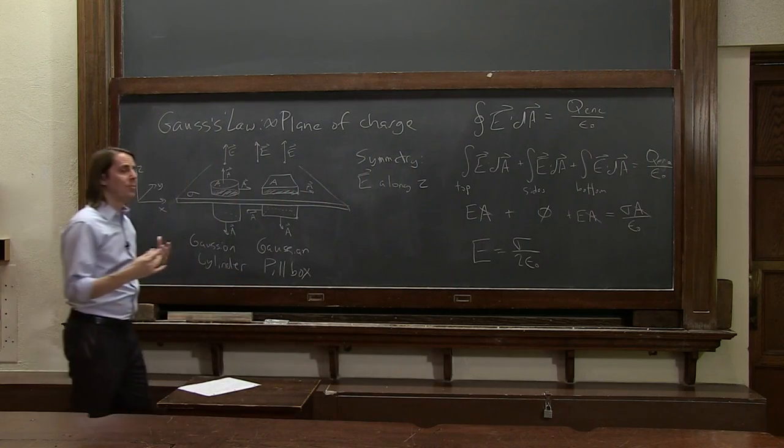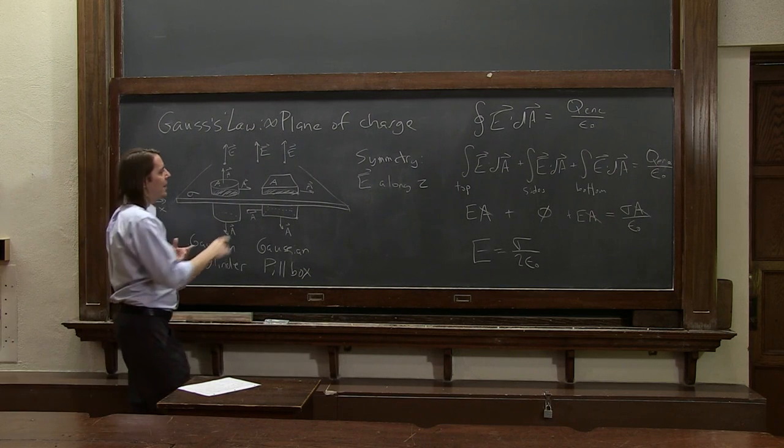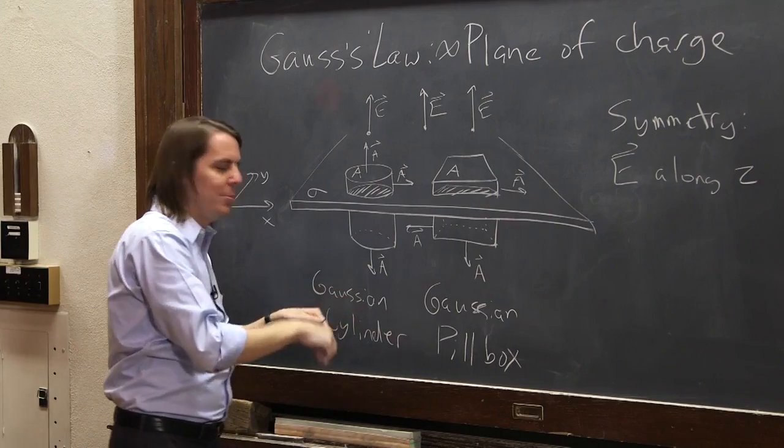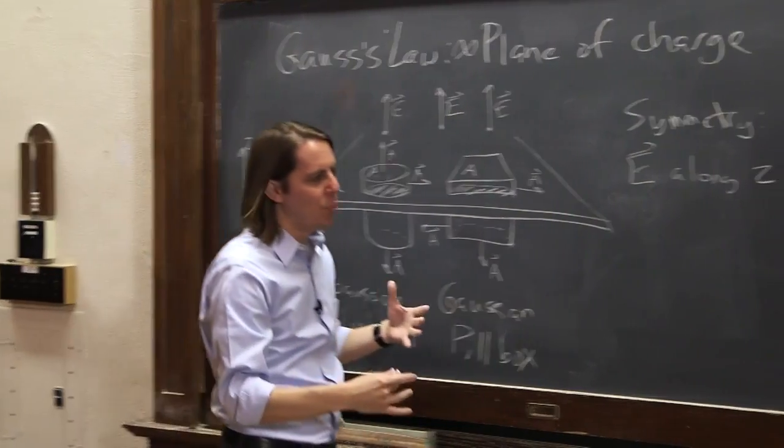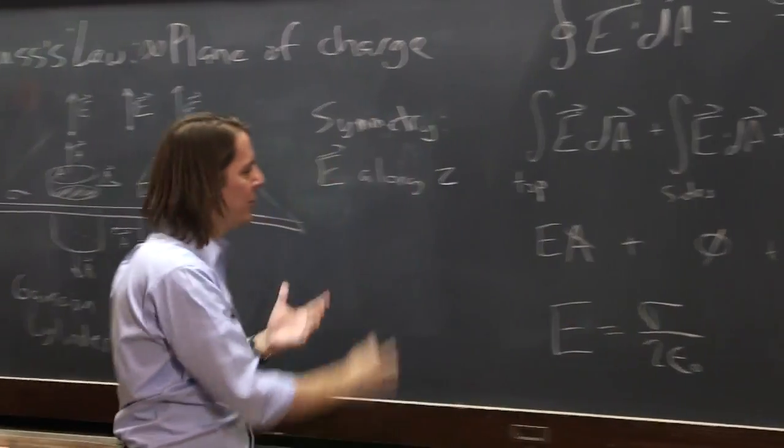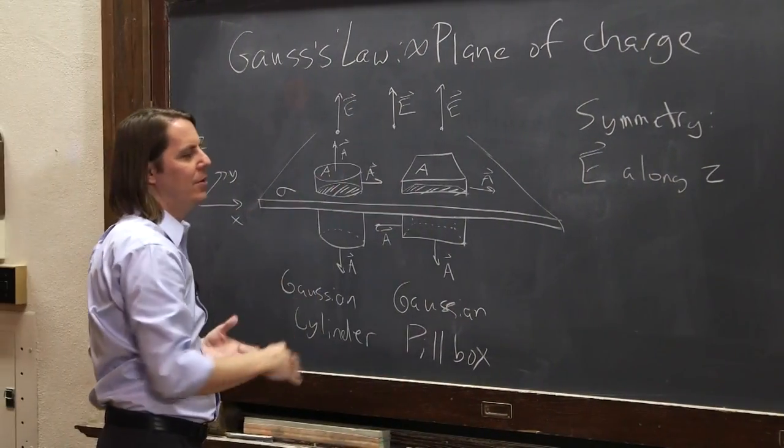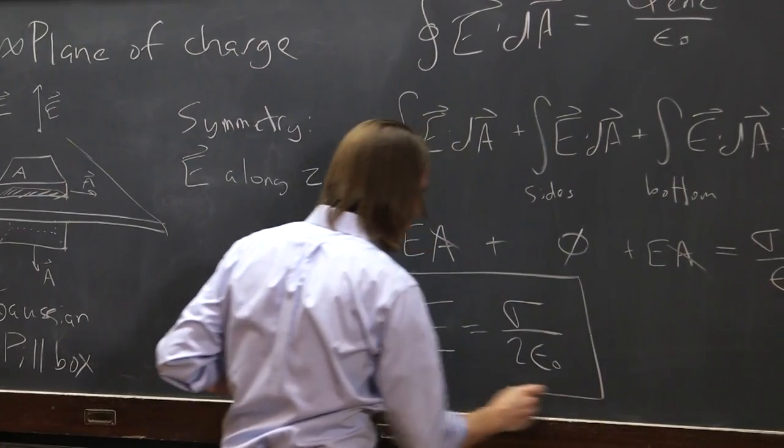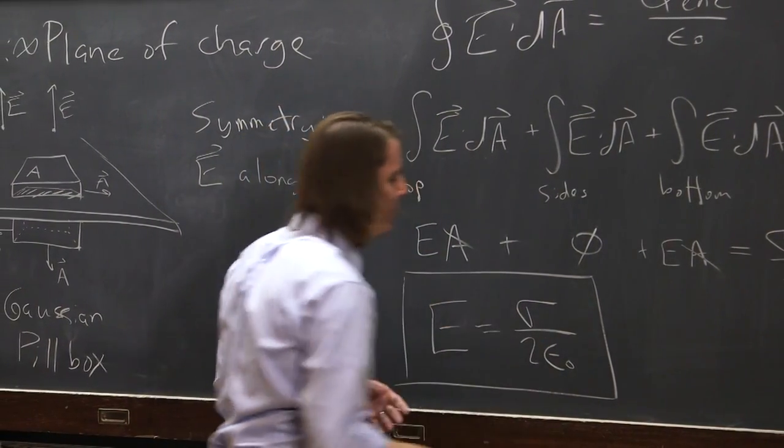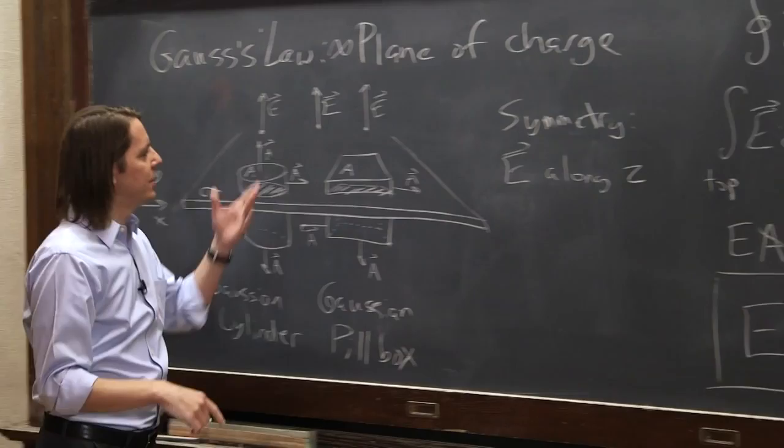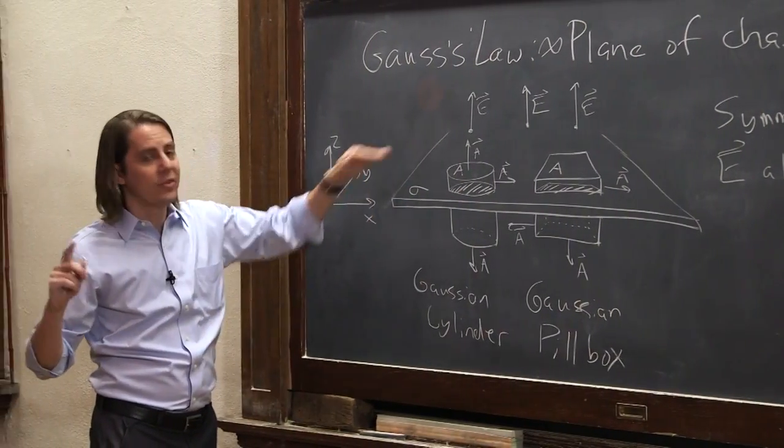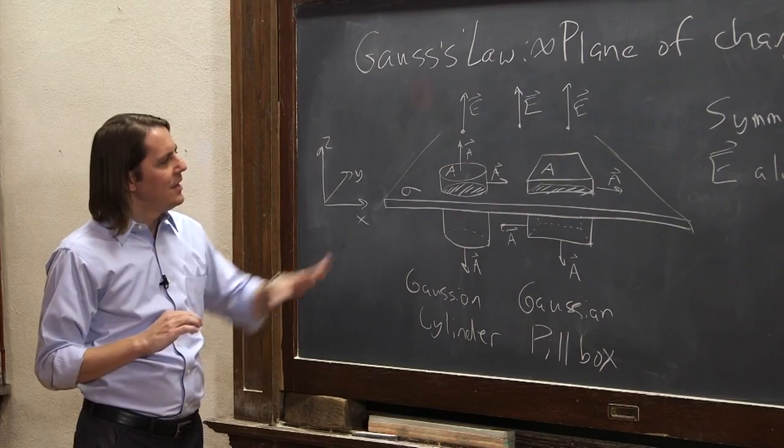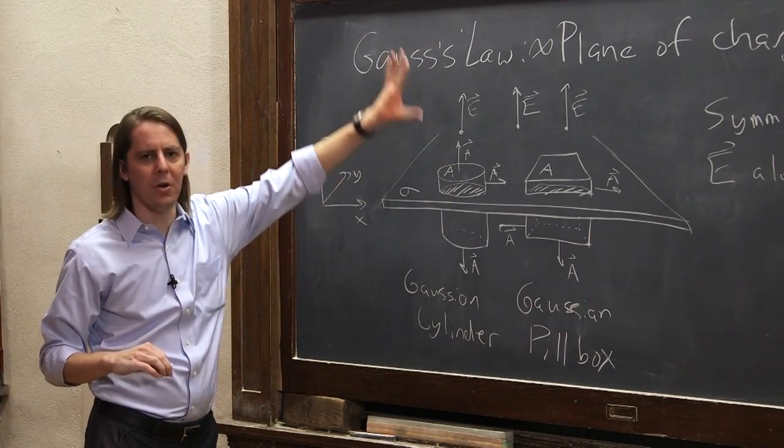So in the end, what you get is that the electric field is sigma over 2 epsilon naught. And if you want to think of it in terms of a vector, you could add a vector. And over the top, it would be in the z direction. And underneath, it would be in the negative z direction. You can't actually write one expression for it because it's not always pointing the same way. It kind of depends on what side you're on. But here, we've solved for the magnitude of the electric field. And the electric field magnitude is sigma over 2 epsilon naught. And the direction depends on what side of the plane you're on.